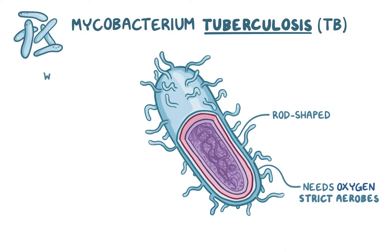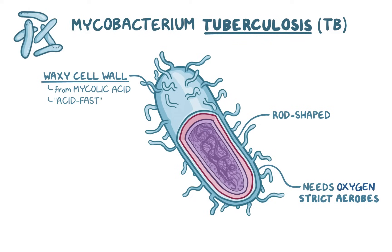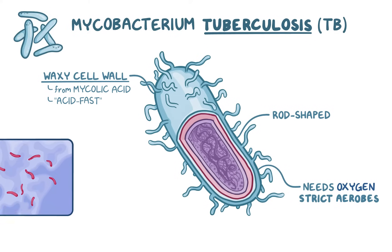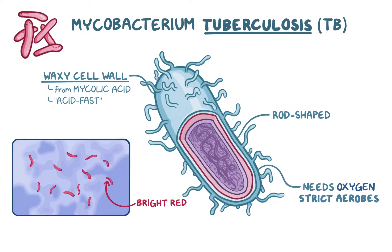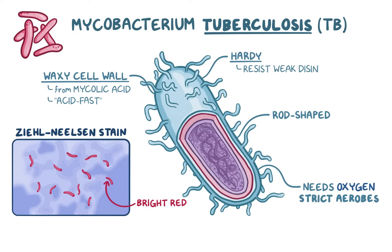They've got an unusually waxy cell wall, which is mainly a result of the production of mycolic acid. Because of this waxy cell wall, they're acid-fast, meaning that they can hold onto a dye in spite of being exposed to alcohol, leaving it bright red-colored when a Ziehl-Neelsen stain is used. The wall also makes them incredibly hardy, and allows them to resist weak disinfectants and survive on dry surfaces for months at a time.